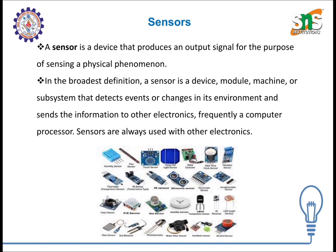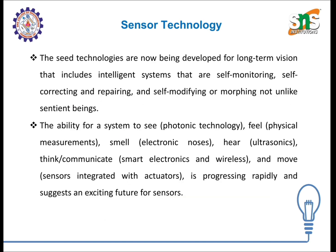Sensors are always used with other electronics. Sensor technology is now being developed for a long-term vision that includes intelligent systems like robotics, AI, and VR that are self-monitoring, self-correcting and repairing, and self-modifying or morphing, not unlike sentient beings. The ability for a system to see via photonic technology, to feel via physical measurement, to smell via electronic noses, to hear via ultrasonics, to think or communicate via smart electronics and wireless sensors, and to move via sensors integrated with actuators, is progressively and rapidly developing, suggesting an exciting future for sensors.